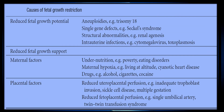This table lists the causes of fetal growth restriction. The first category is reduced growth potential, which occurs in aneuploidies (e.g., trisomy 18), single gene defects (e.g., sickle cell syndrome), structural abnormalities (e.g., renal agenesis), and intrauterine infections (e.g., cytomegalovirus or toxoplasmosis).